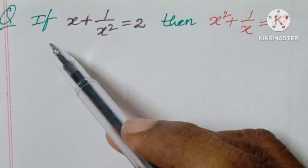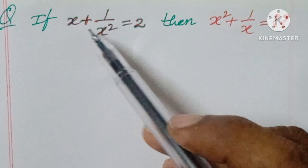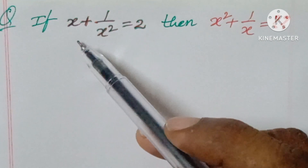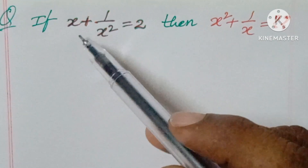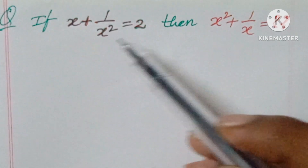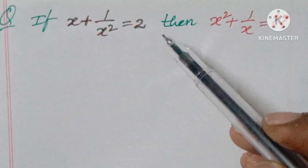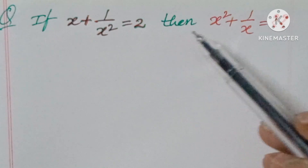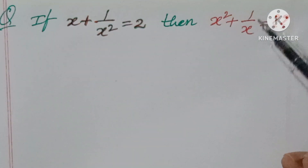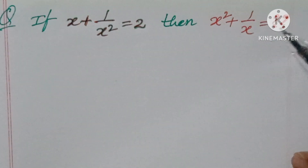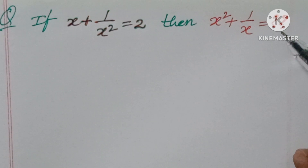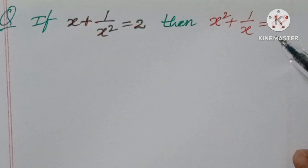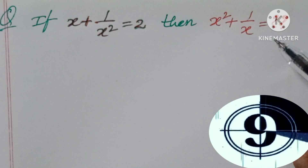Hello, welcome back to I on CG Max. Today we are looking at one logical question: if x plus 1 by x squared is equal to 2, then x squared plus 1 by x is equal to how much? Pause the video for 10 seconds and try it.